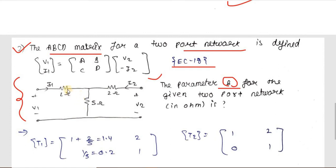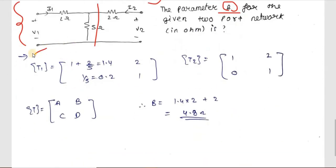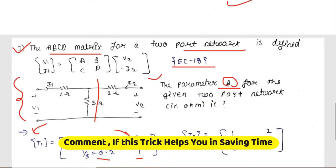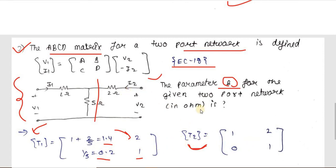We divide the T-network into two sub-networks. For network one: ZA = 2 Ω, ZB = 5 Ω. So A = 1 + ZA/ZB = 1 + 2/5 = 1.4. B = ZA = 2. C = 1/ZB = 1/5 = 0.2. D = 1.